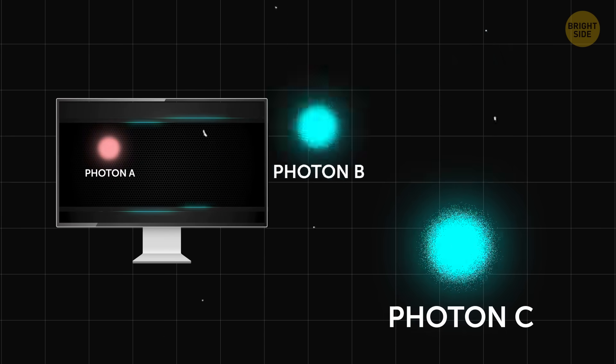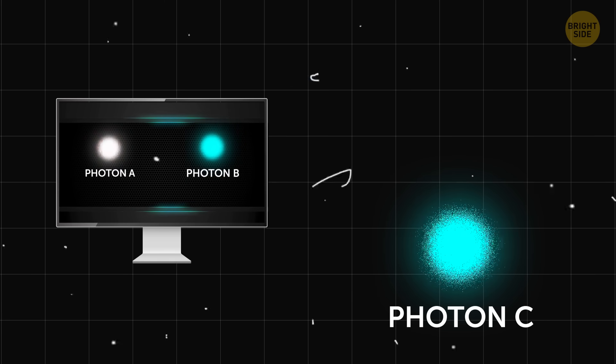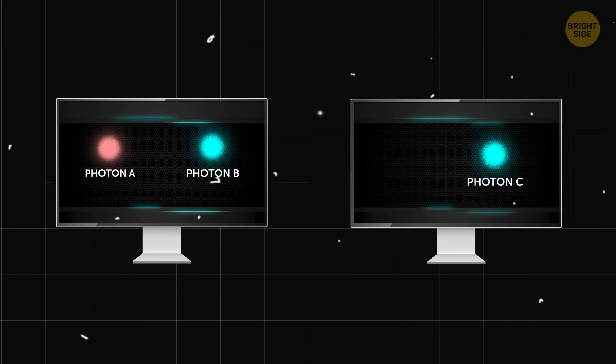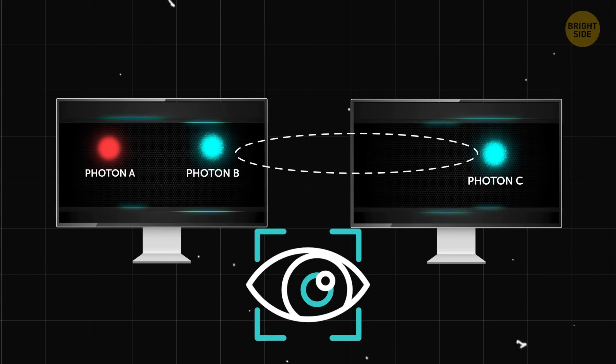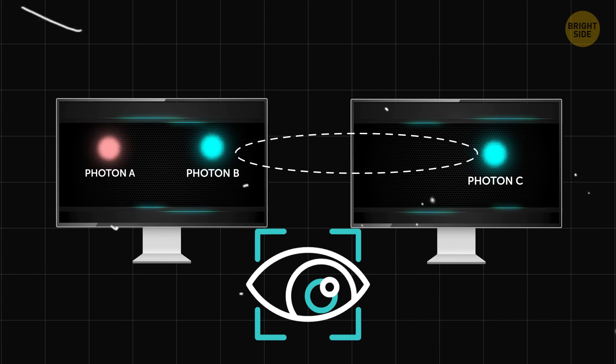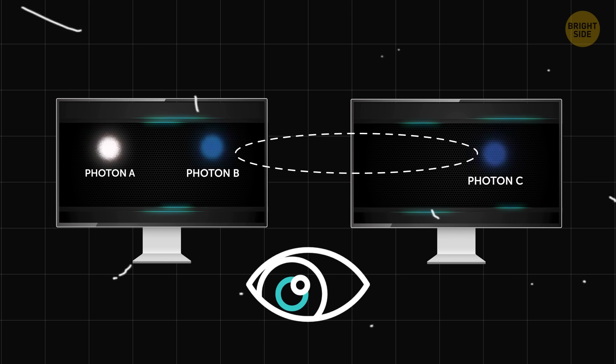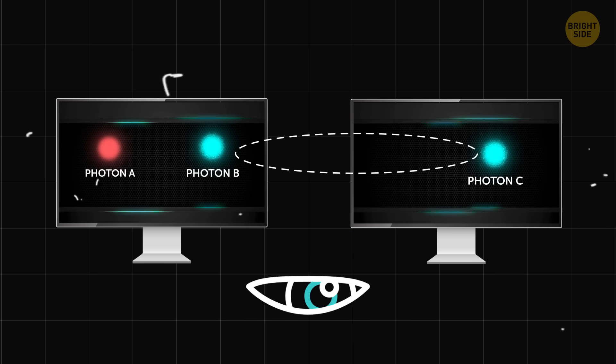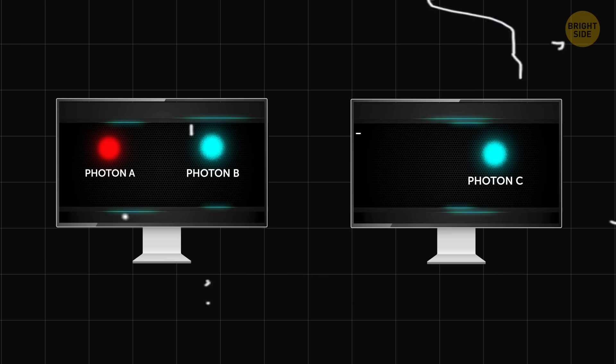Photon B is located on the first computer. Photon C is located on the second computer. You remember that photons react to each other. That is, if you measure and look at one photon, the second one will immediately feel it and take the appropriate shape. You're not looking at them right now. Just remember this fact.